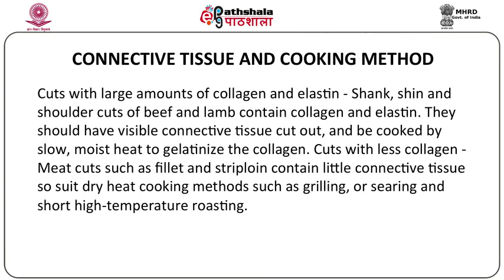The cuts of meat that contain a large amount of collagen and elastin include the shank, the shin, and the shoulder cuts of beef and lamb. These cuts need to be cooked slowly by moist heat methods in order to gelatinize the collagen. Cuts with less collagen — such as fillet and sirloin — contain very little connective tissue, so dry heat cooking methods are more suitable, like grilling or searing, and short high-temperature roasting.